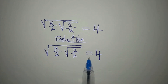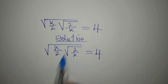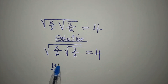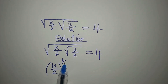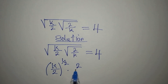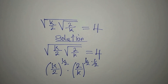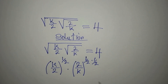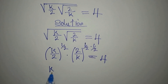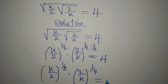We have k over 2 under one square root sign, so that means we have k over 2 raised to the power of 1/2. Then we multiply by 2 over k, which is under a 2nd square root sign, so we have 2 over k to the power of 1/2 times 1/2, which is 1/4. This gives us (k/2)^(1/2) multiplied by (2/k)^(1/4) equals 4.